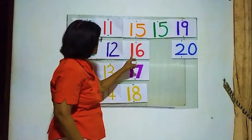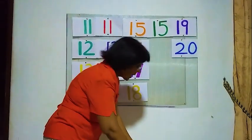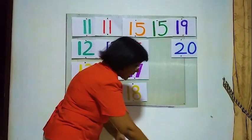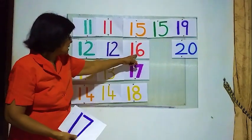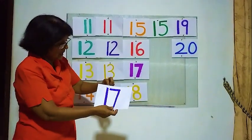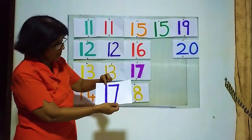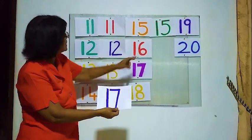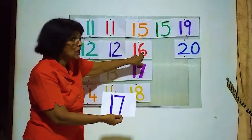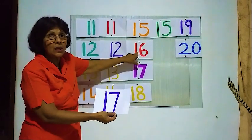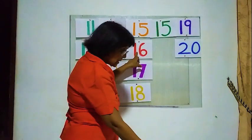Now what is this number? 1 and 6 — 16! Number 16. This is 1 and 7 — is this number 1 and 7? No, this is 1 and 6 — 16. We are searching number 16, this is wrong. This is 1 and 7.